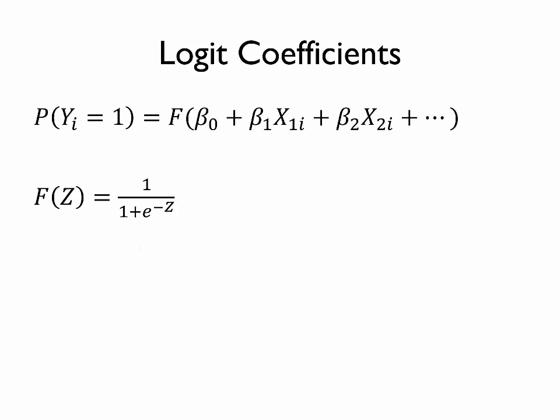In the video on binary dependent variables, we introduced the logit model, which is shown by this equation at the top. So y is a binary outcome variable, and the logit model predicts the probability that that binary variable is equal to 1 as opposed to 0. That probability is a function capital F of a linear function of one or more independent variables denoted by the x's. The capital F is the function shown in the middle of the screen, and recall that it always produces values between 0 and 1. This was necessary because we are predicting a probability and addresses some of the concerns of linear probability models, which sometimes predicted probabilities less than 0 or greater than 1.